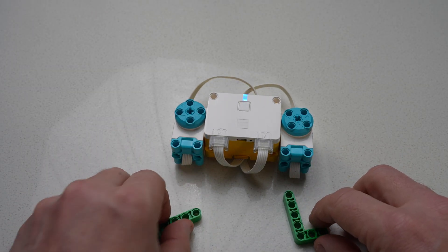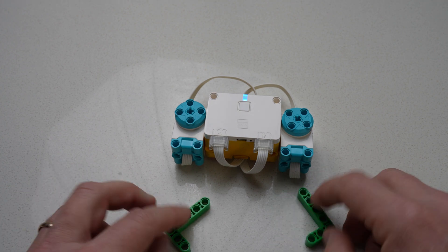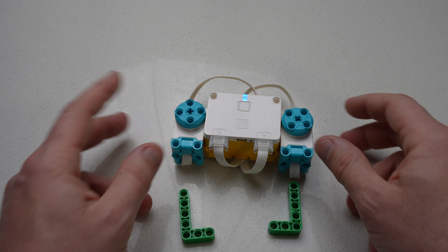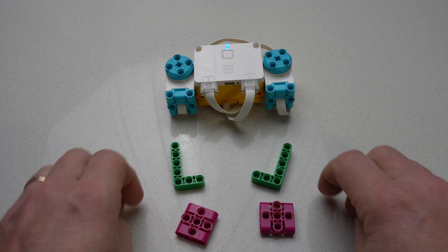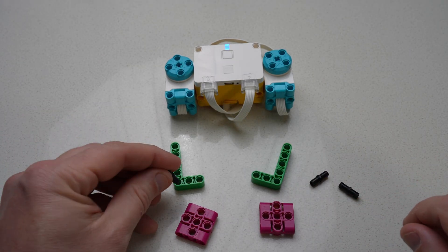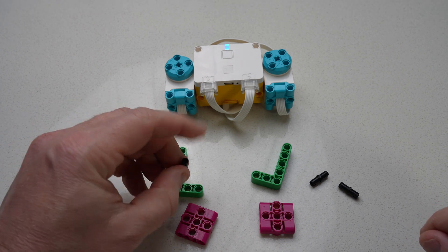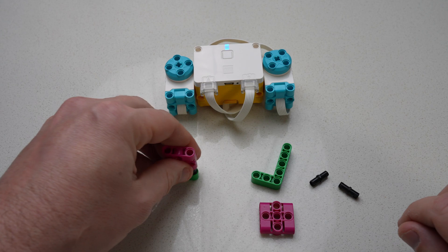For our legs, we're going to use these two green L-beams. And into these green L-beams, down at the very bottom, the short side of that L, we are going to plug in two black pins so that we can attach these purple squares. These are going to be the feet of our crab. This is what's going to allow it to stand up and not fall down.